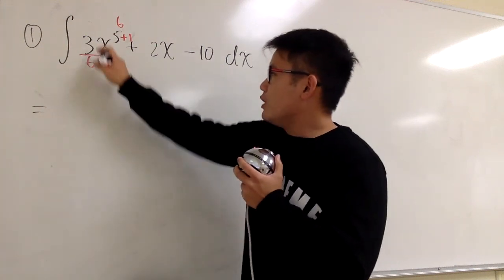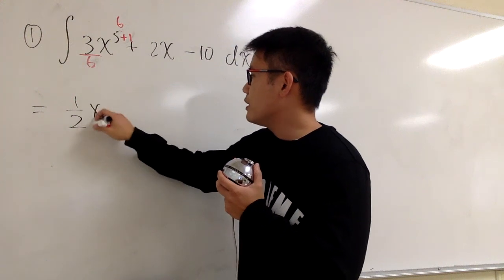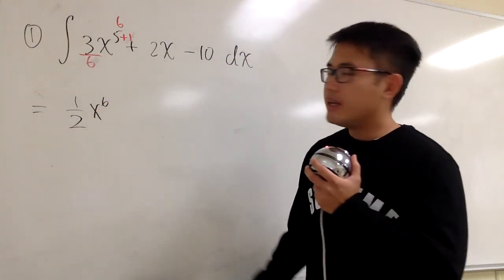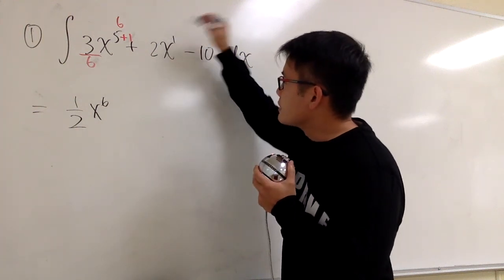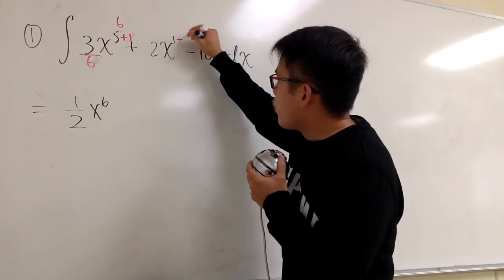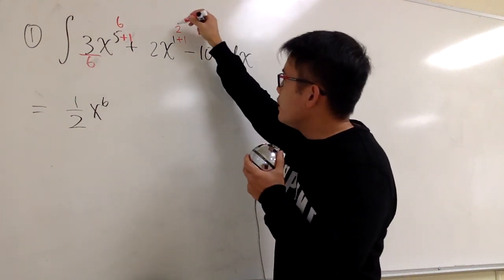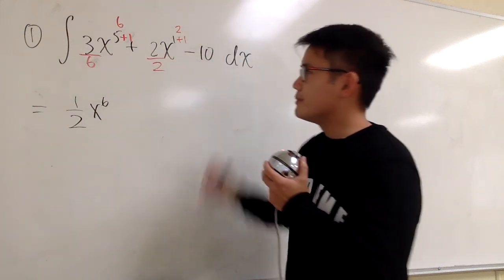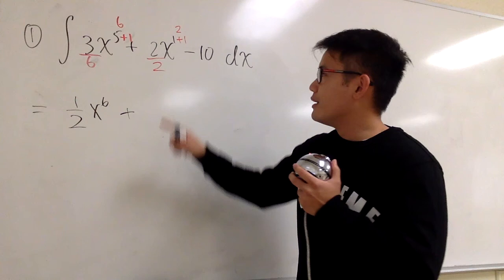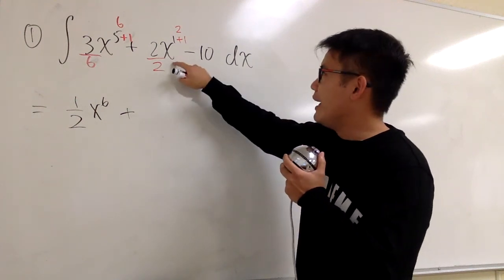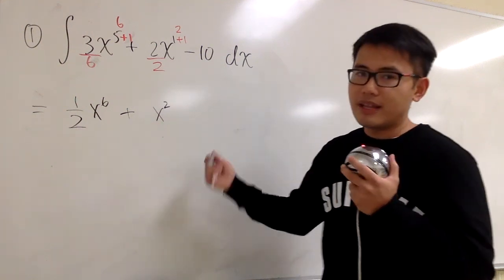3 over 6 is going to be 1 half, and then we have x to the 6th power — so this is the first part of the answer. Secondly, we have plus 2x, and this x is the same as x to the first power, so we can add 1. 1 plus 1 is 2, that's the new exponent, and then we divide by this new exponent — we divide by 2. So 2 over 2 is just 1, and we have x to the second power, which is just plus x squared.